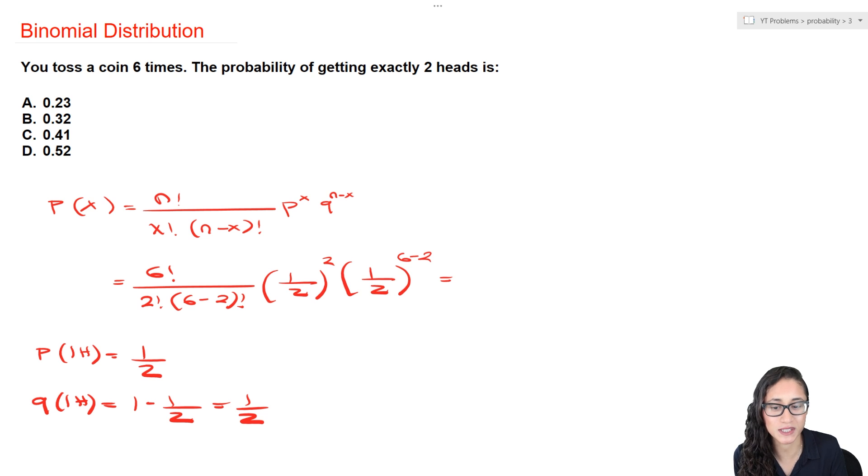And then for Q, we're going to do six minus two, because if we get two heads, and we're tossing this six times, the other four times it's going to be tails. That's the probability of failing of getting two heads.